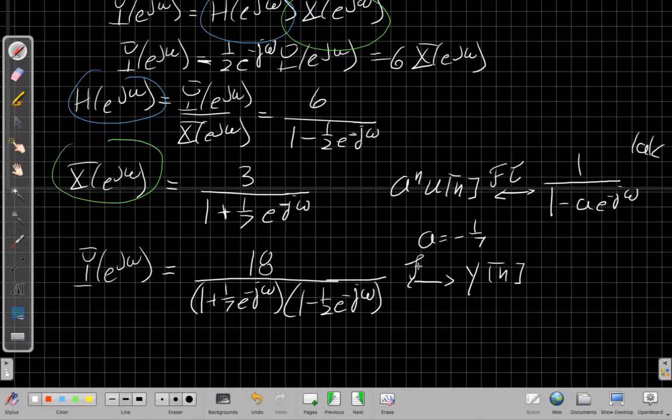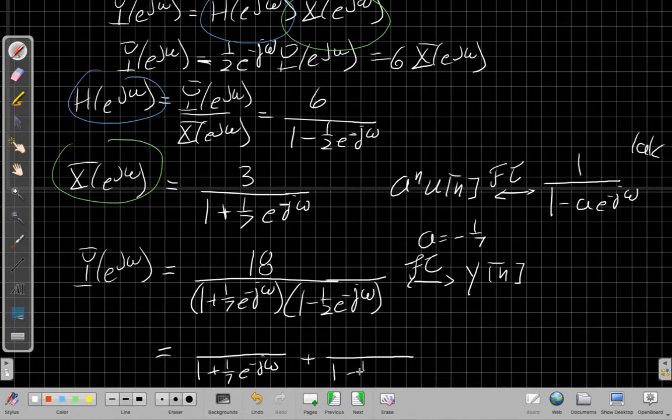I need to do an inverse Fourier transform, but this isn't one I'll find in the table. Can I take this thing I got by multiplying these two together and break it back apart into a sum of two pieces? If I can find these two numerators, these are each easy things to solve using the formula. The answer to doing this is partial fractions, which is another place where partial fractions are useful.